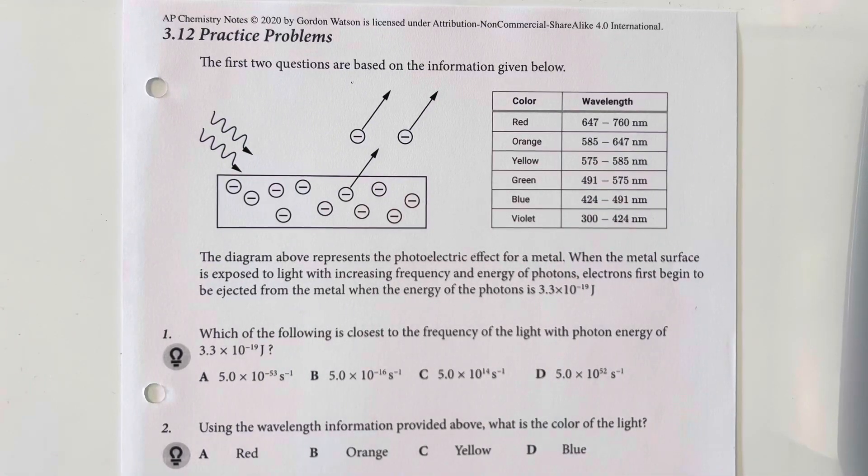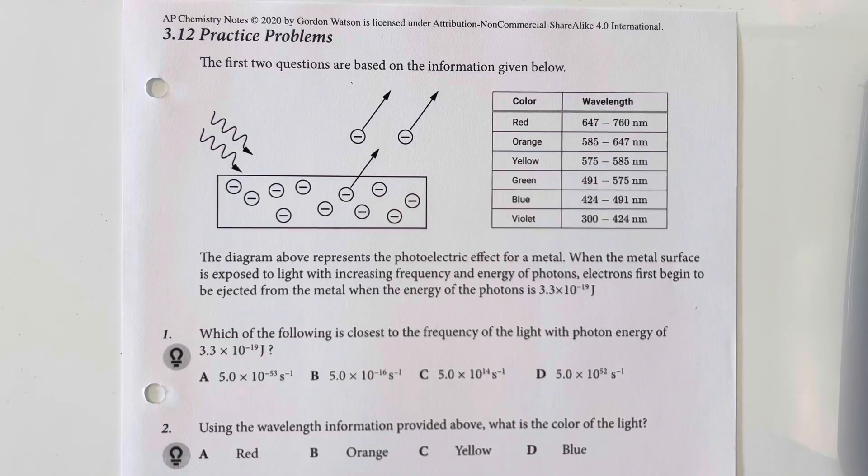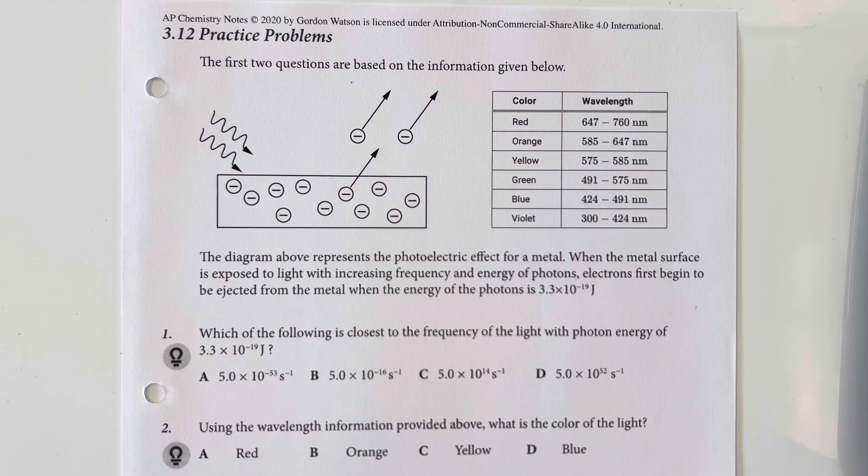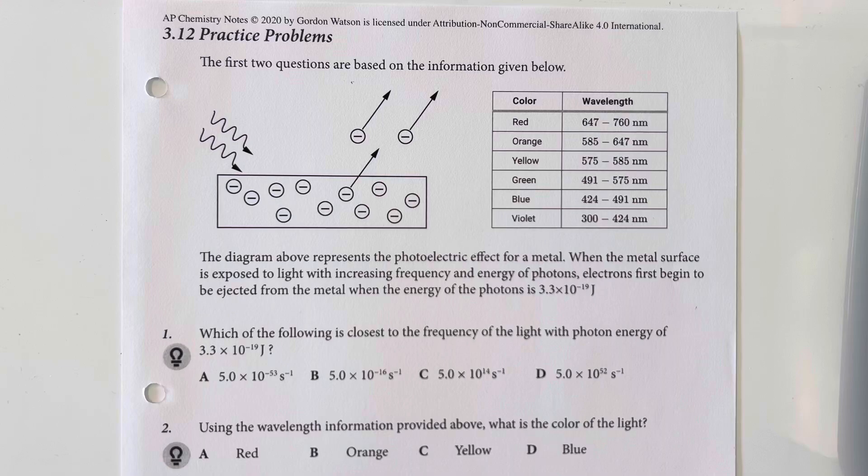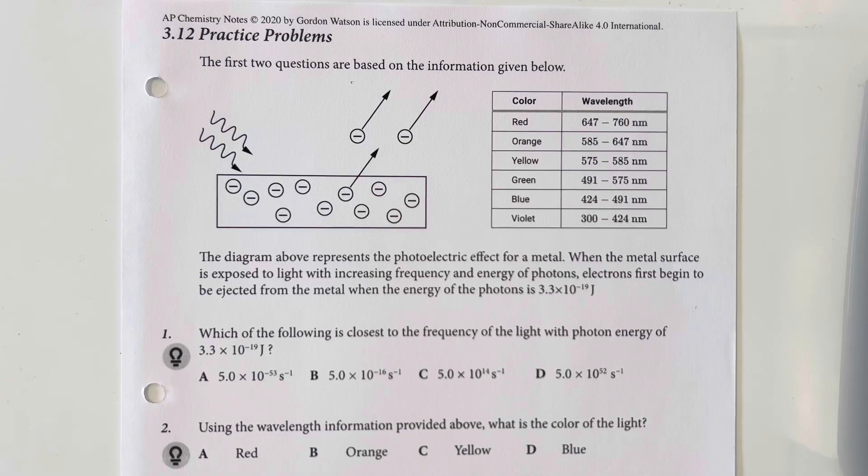3.12 practice problems. The first two questions are based off of the information given below. The diagram above represents the photoelectric effect for a metal, where the metal surface is exposed to light with increasing frequency and the energy of photons. Electrons first begin to be ejected from the metal where the energy of the photon is equal to 3.3 times 10 to the negative 19th joules.